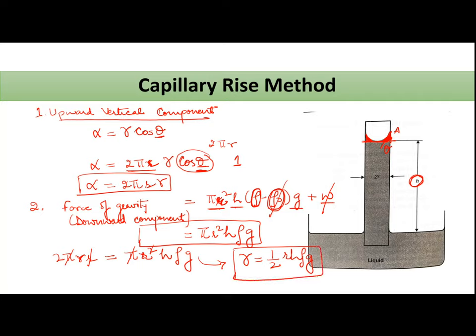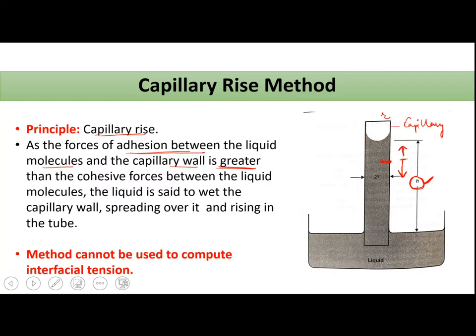So in the capillary rise method, you will simply note down what is h, kitni height aapka liquid aapki capillary mein gain karta hai. r aapko pata hai for a particular capillary the radius will be constant. For a particular liquid, you will get your density jo aapko already known hogi. g ki value aapko already pata hai. So by simply noting down the value of h, you can find out surface tension using capillary rise method.